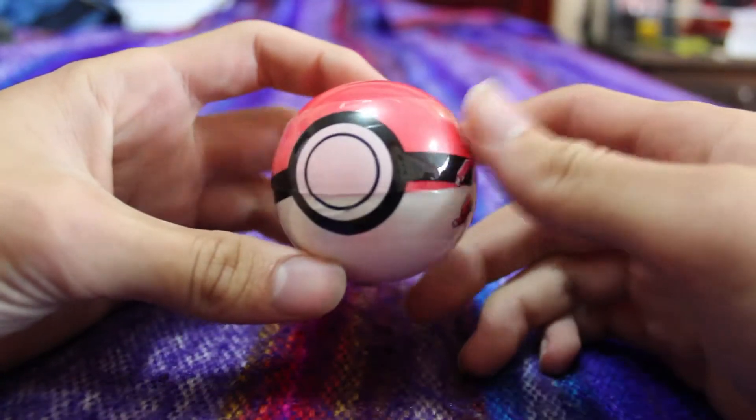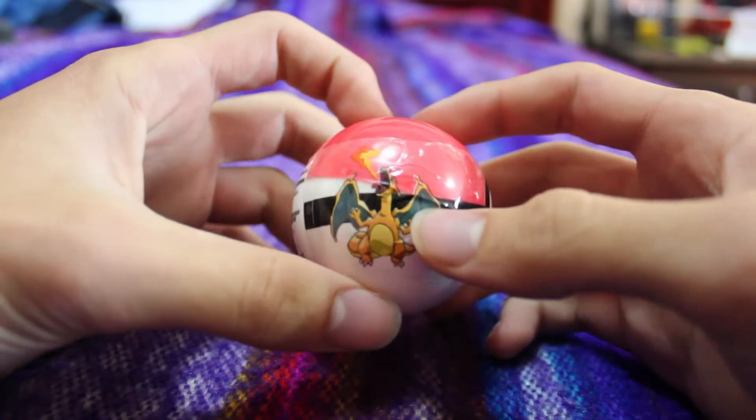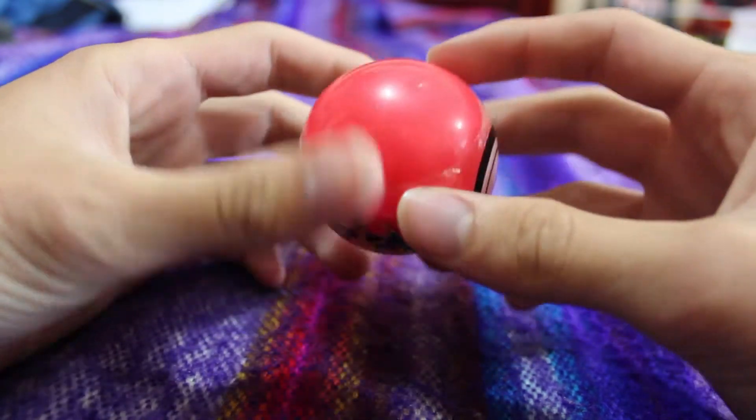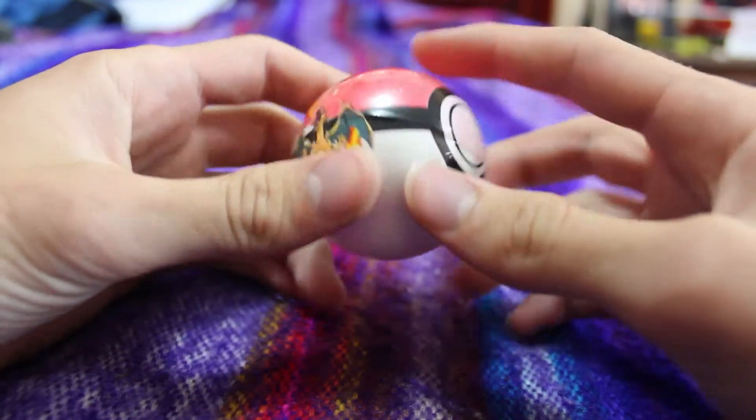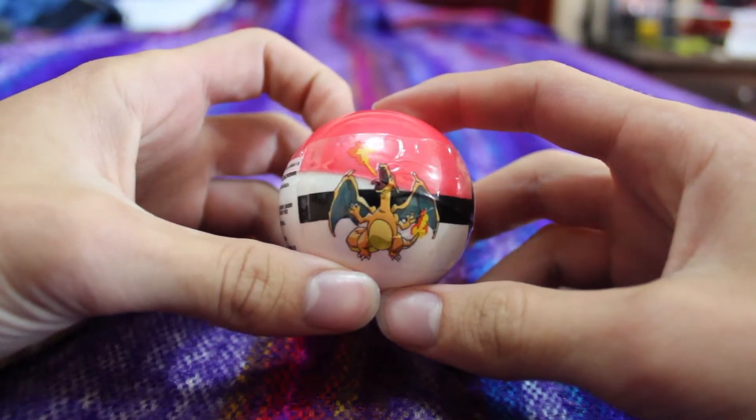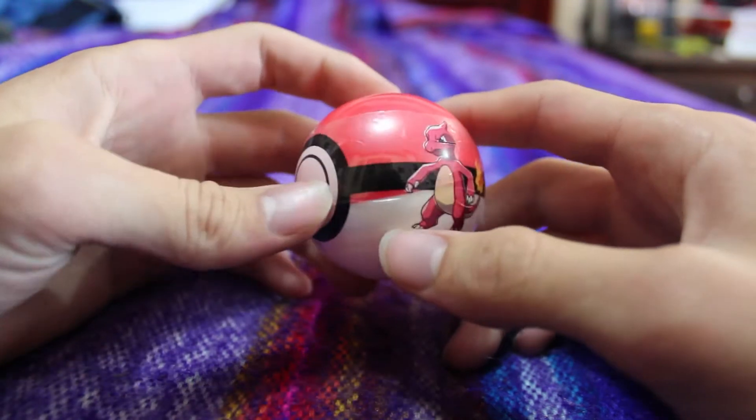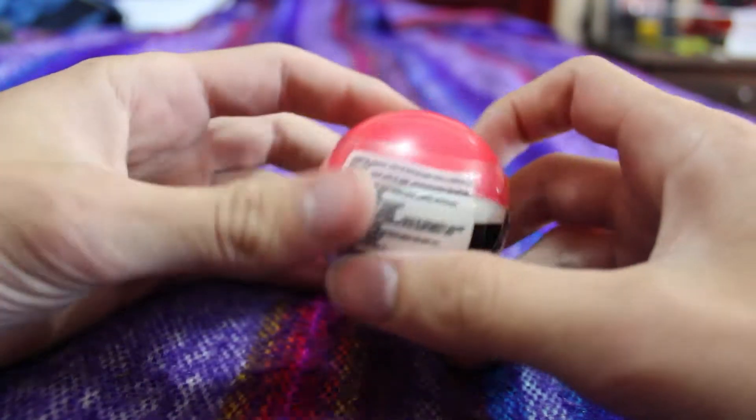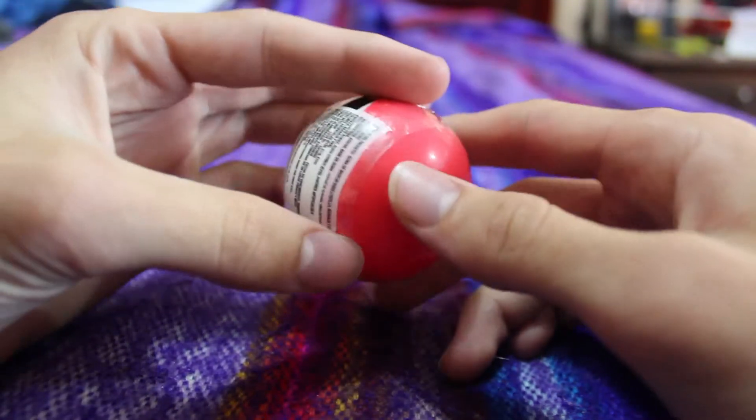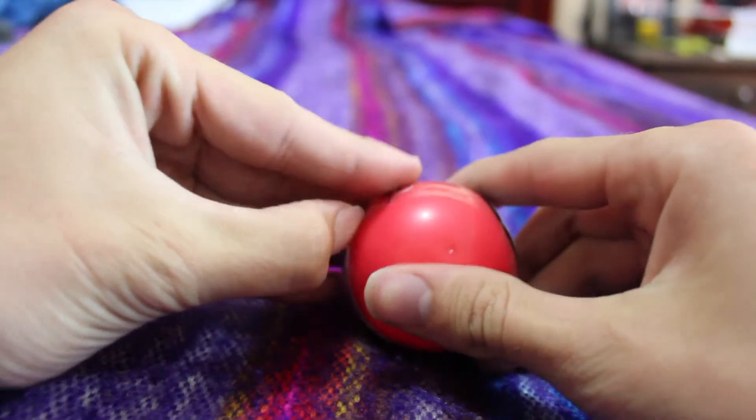I think that's as good as we're gonna get it. Here it is. They're like a little plastic Pokeball. Sorry for any clickbait that you think I may have done. It's got Charmeleon on it and Charizard. Let's open it. Why not?